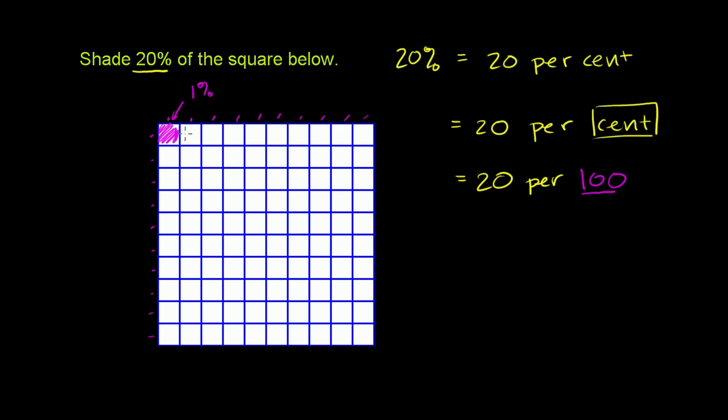If I were to shade another one, if I were to shade that and that, then those two combined, that's 2% of the entire square. It's literally 2 per 100, where 100 would be the entire square. So if we wanted to do 20,